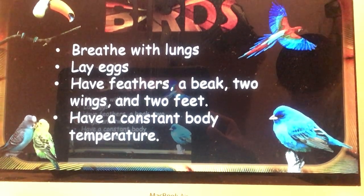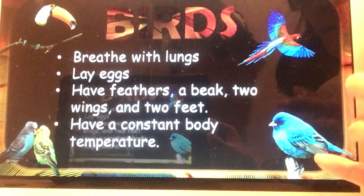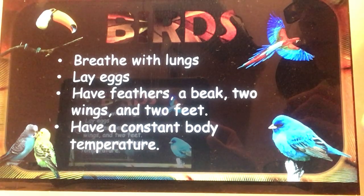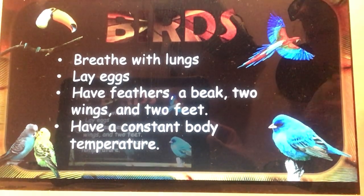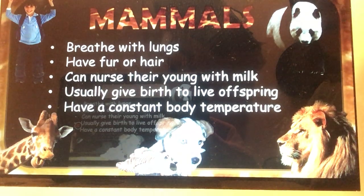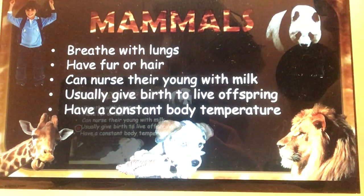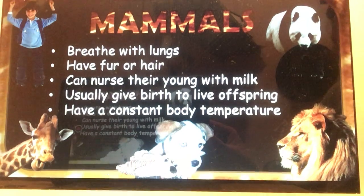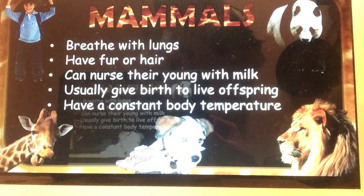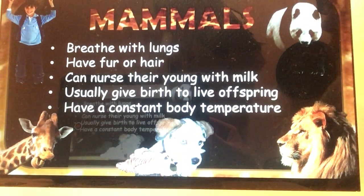Birds breathe with lungs, lay eggs, have feathers, a beak, two wings, and two feet, and have a constant body temperature. This shows what makes each vertebrate group different — what makes a bird different from an amphibian or a reptile. The last group is mammals: they breathe with lungs, have fur or hair, nurse their young with milk, usually give birth to live offspring, and have a constant body temperature. Mammals are really the most different because they don't lay eggs — they give birth to live babies and provide milk to their young.